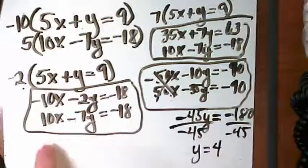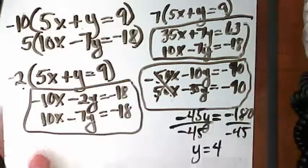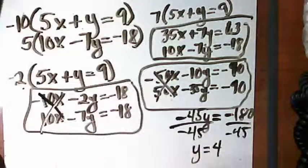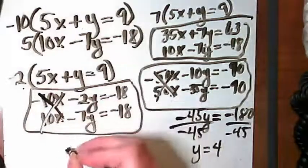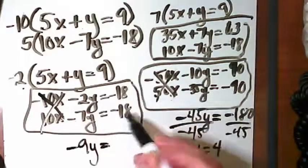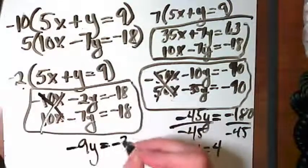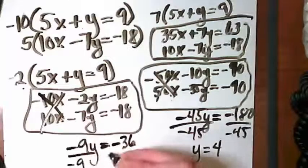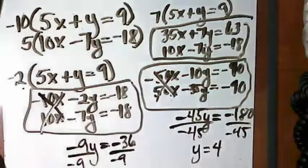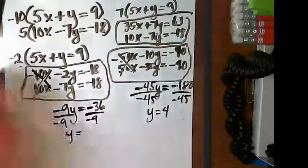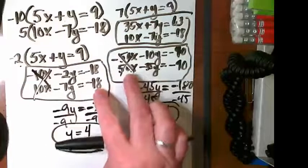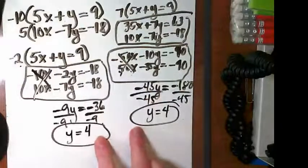Let's try it with this one. Negative 10x and positive 10x zeros out. We're just eliminated. Negative 2y and negative 7y is negative 9y. Negative 18 and negative 18 is negative 36. I get y is equal to 4. Even though these two sets look different, we ended up with the same solution.